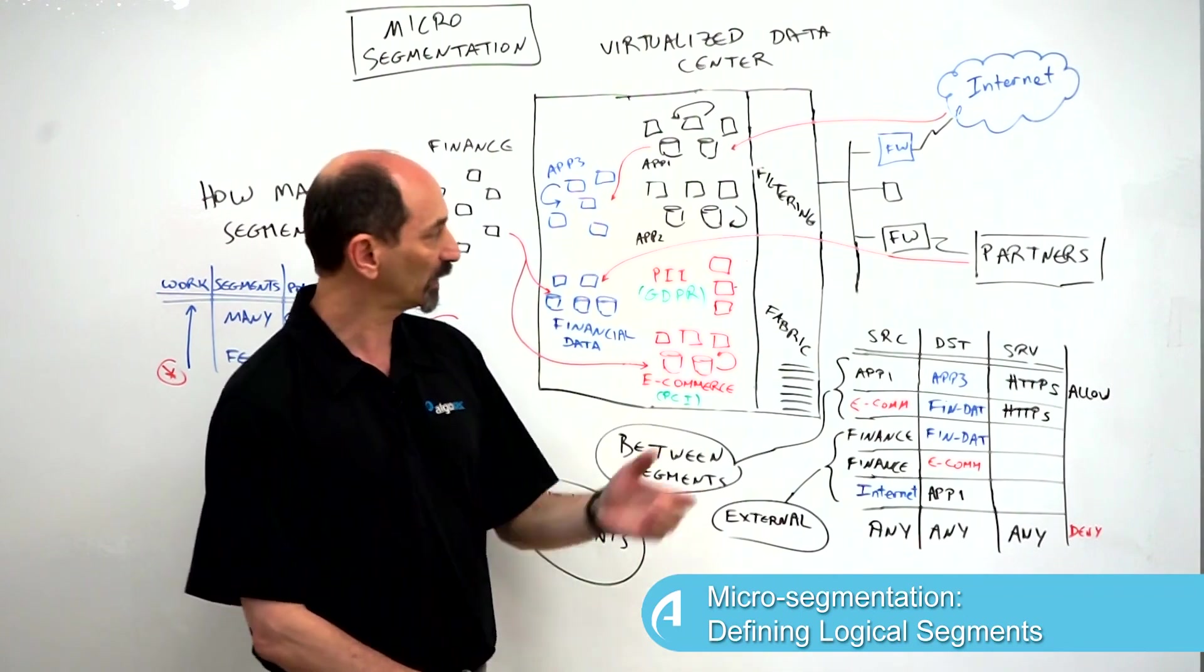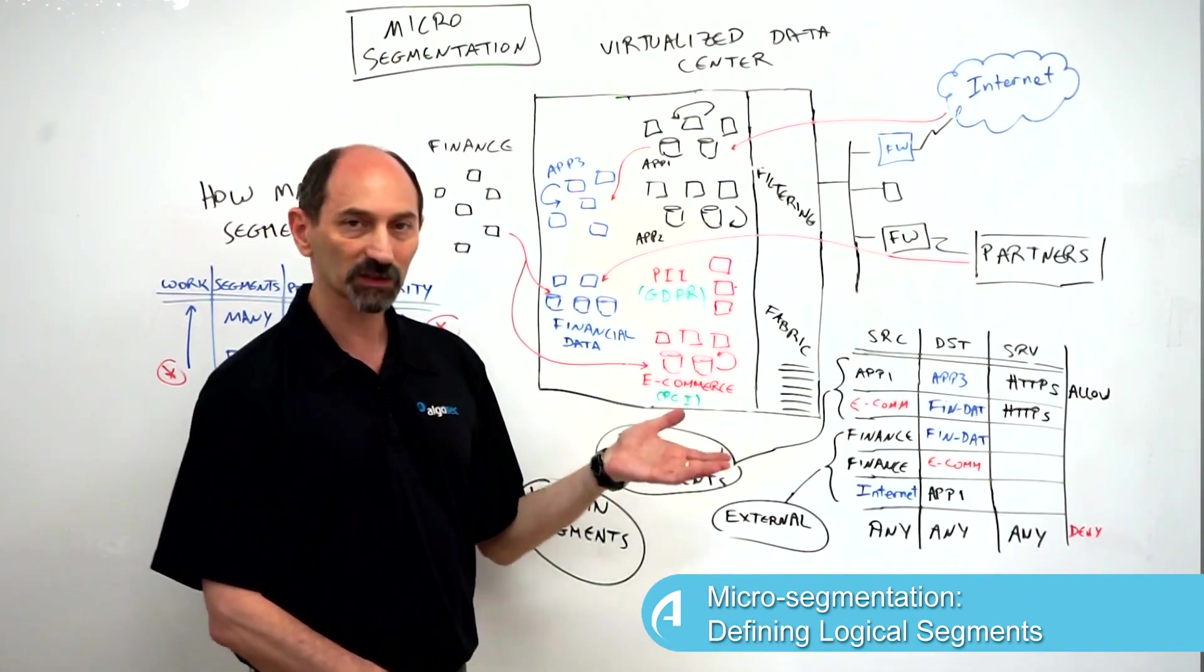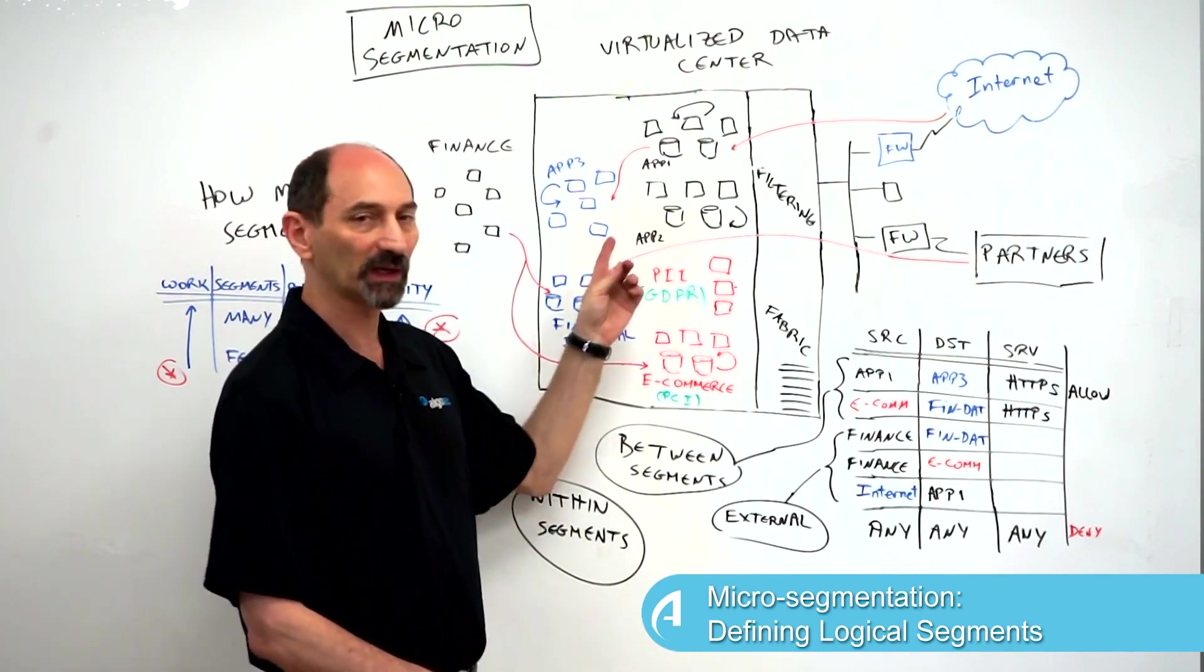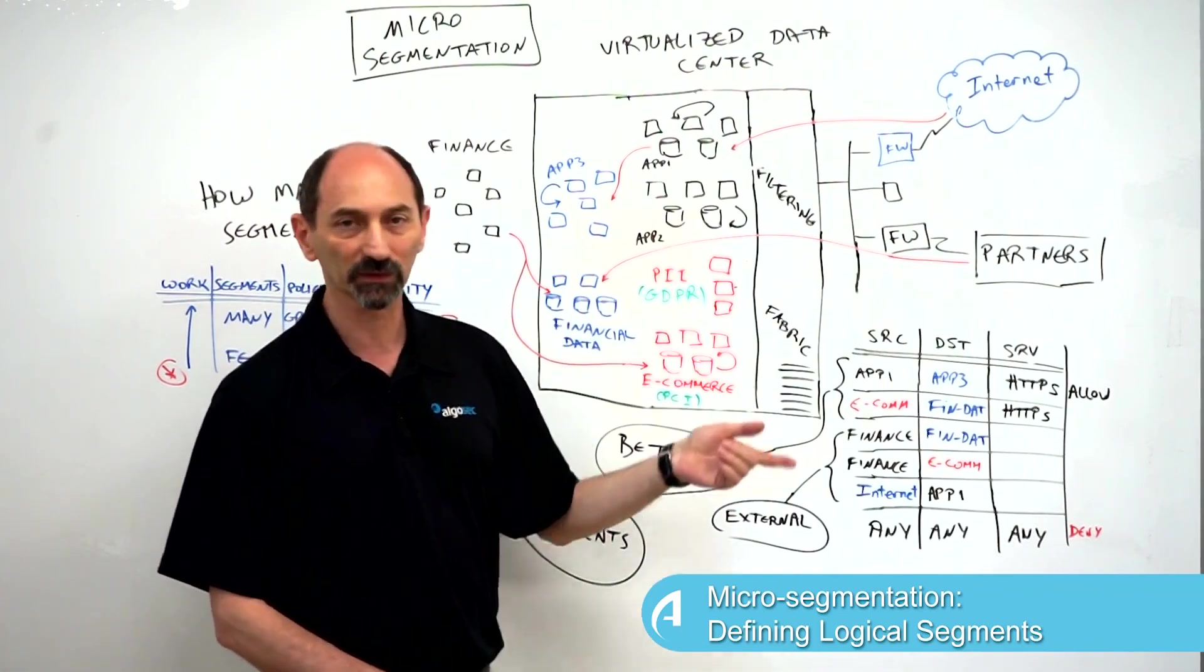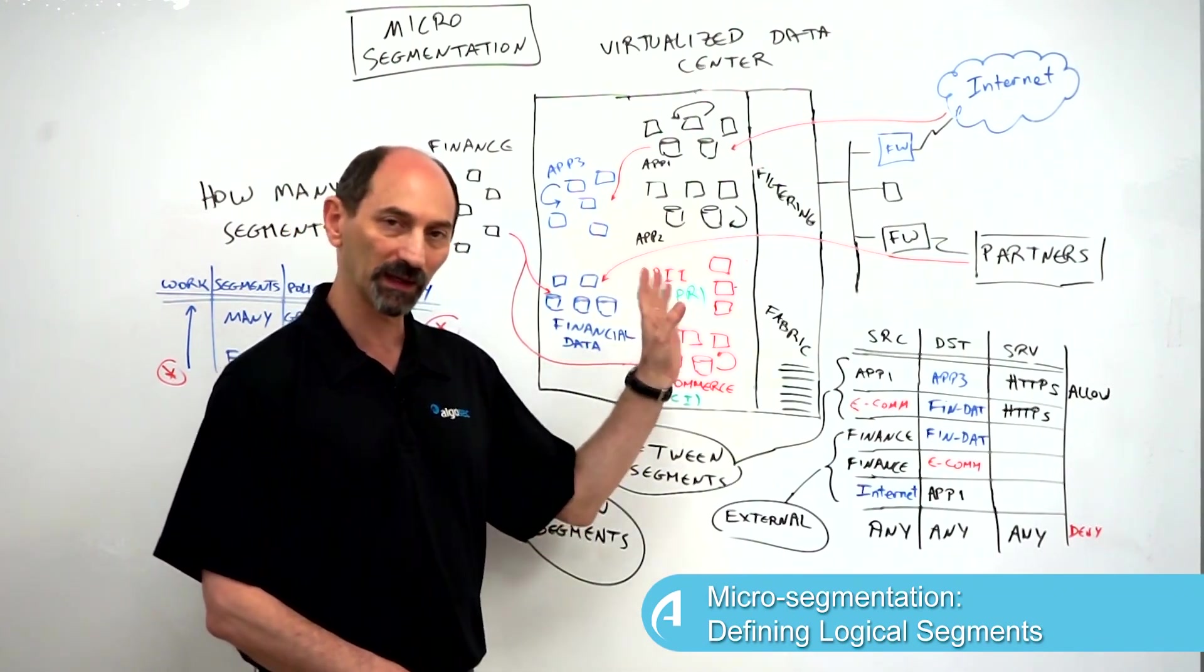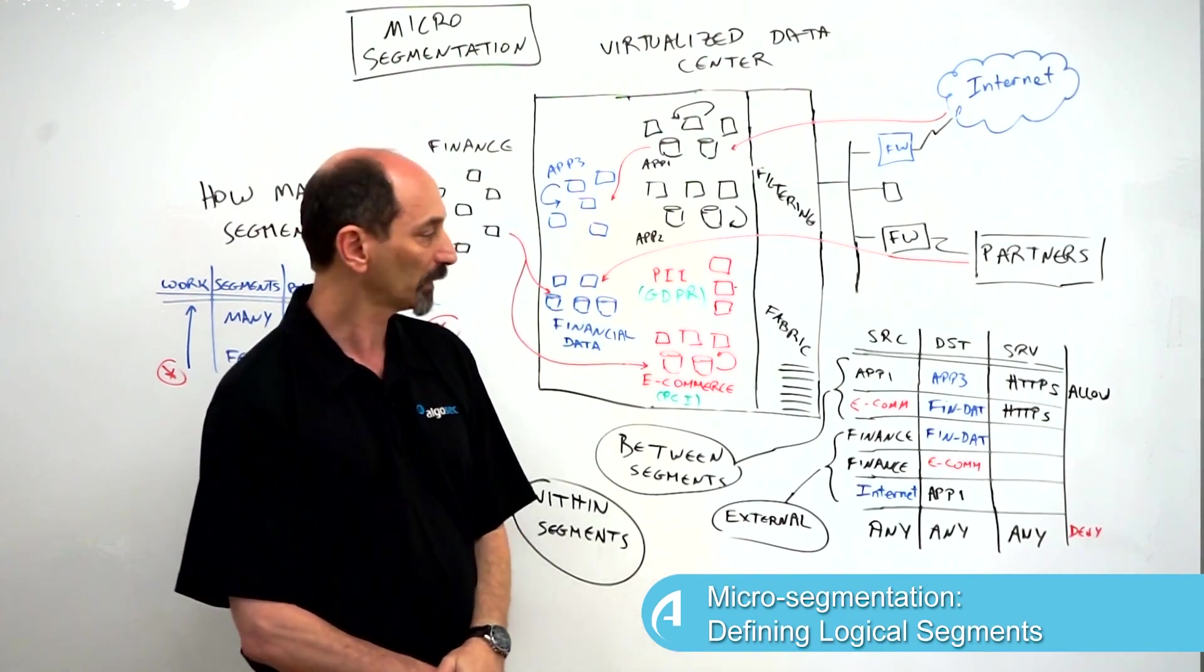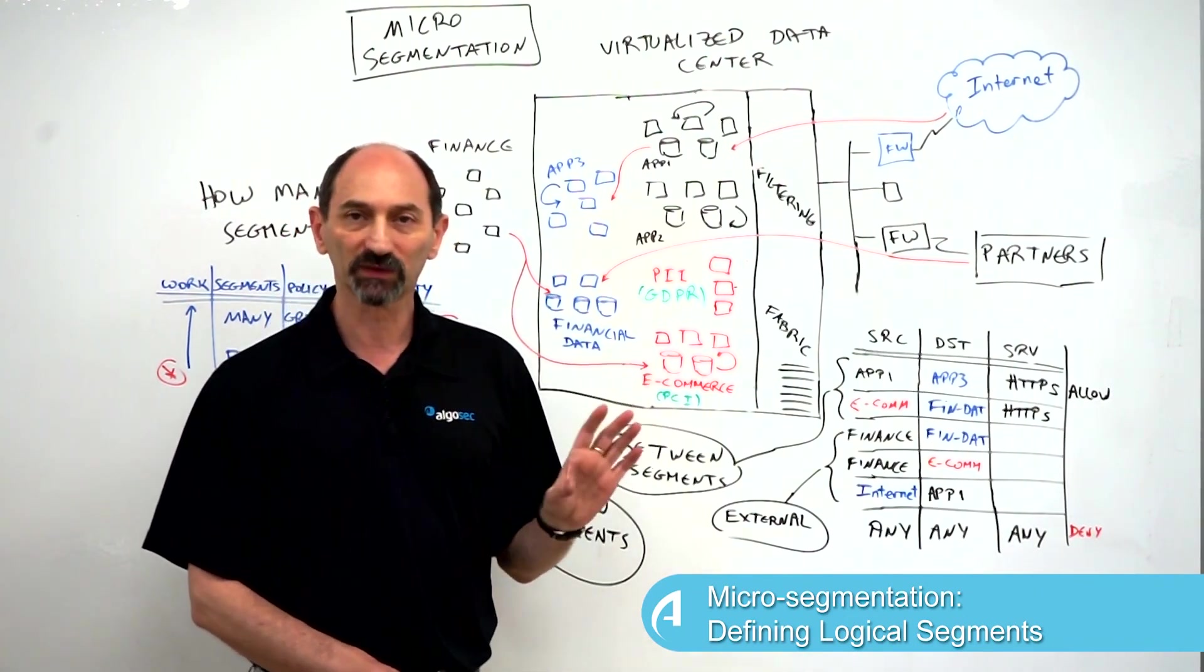We have a technology that allows us to introduce filtering. We have a filtering fabric underlying the data center that lets us control any type of communication inside the data center and also traffic coming into and out of the data center, and we can write policy to allow or block any type of traffic like that.